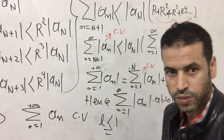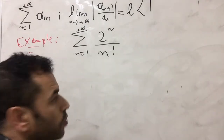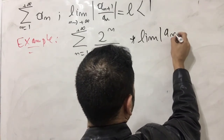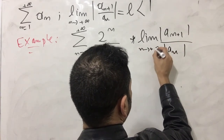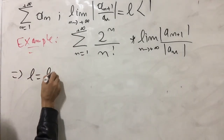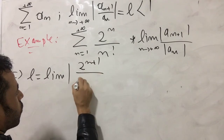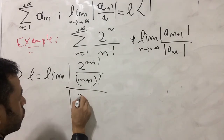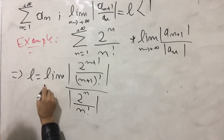Now I'm moving on to an example as support for this proof. I will calculate the ratio for this example. We compute the limit of |a_{n+1}| / |a_n| as n goes to infinity. This gives us the limit of |2^{n+1} / (n+1)!| divided by |2^n / n!| as n goes to infinity.